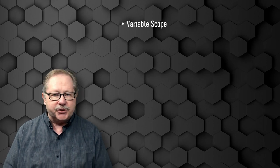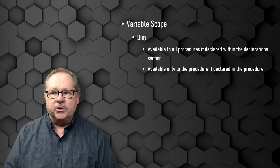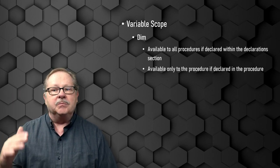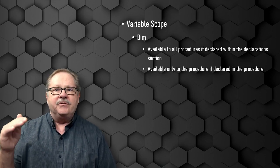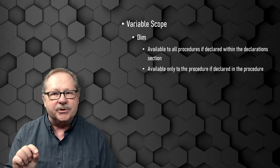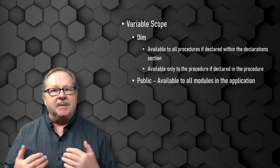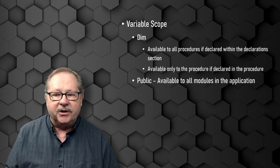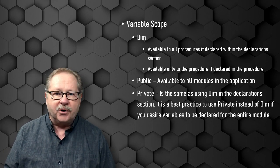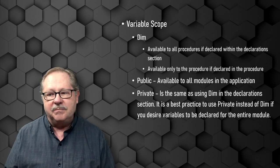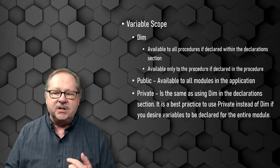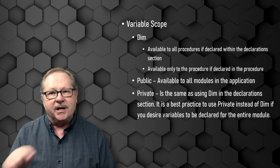The next thing we want to talk about is variable scope. If you use the Dim keyword in the declaration section — above where Option Explicit appears — the variable is available to all procedures within that module. If you declare it within a subroutine or a function, it's available only to that procedure. The next level is to make it Public — a public variable is available to all modules within the application. There's also Private, which is essentially the same as Dim when used in the declaration section. It's best to use Private instead of Dim if you want variables declared for the entire module.